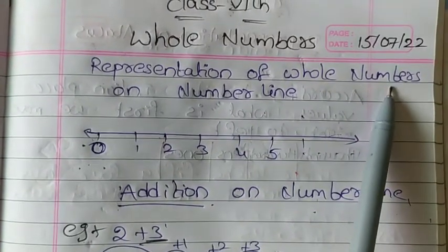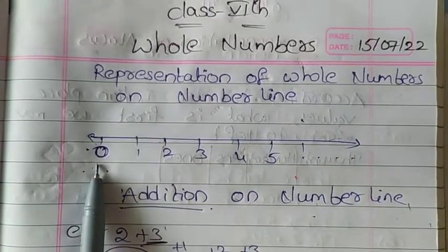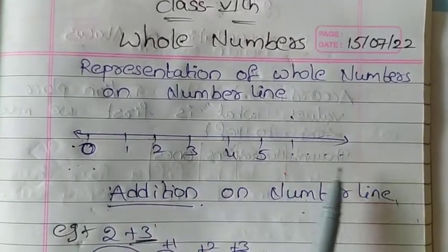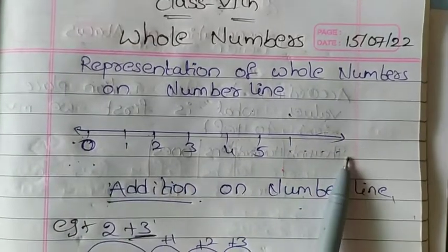What is whole numbers learning? Where it starts from 0. 0, 1, 2, 3, 4, 5. The collection of 0 with natural numbers is known as whole numbers.